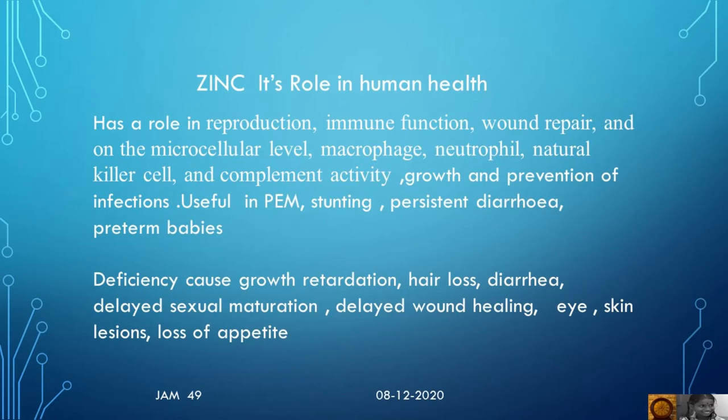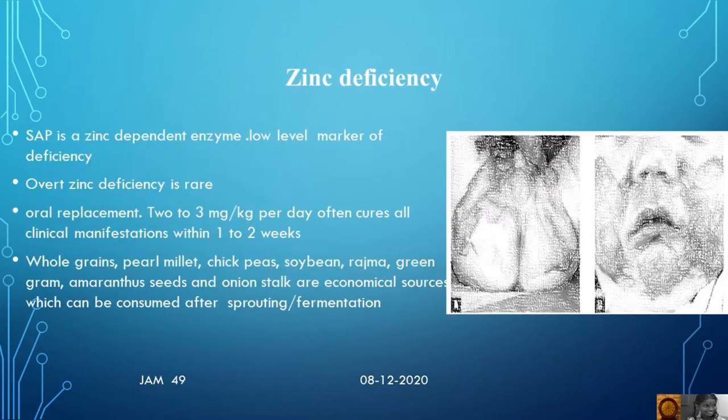Zinc deficiency causes growth retardation, hair loss, diarrhea, delayed sexual maturation, delayed wound healing, eye and skin lesions, loss of appetite, and cognitive defects. Serum alkaline phosphatase is a zinc-dependent enzyme, and a low level serves as a marker of deficiency. Overt zinc deficiency is rare.